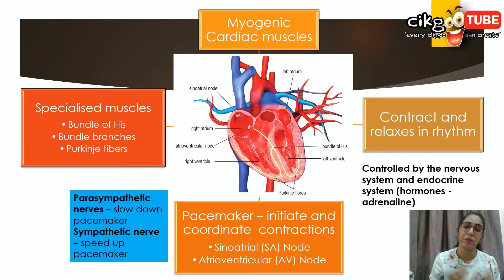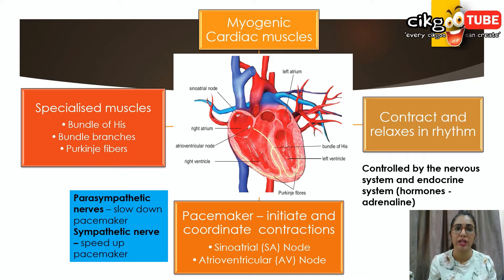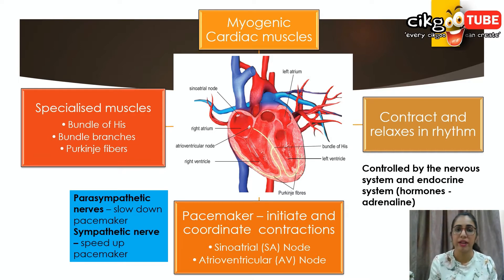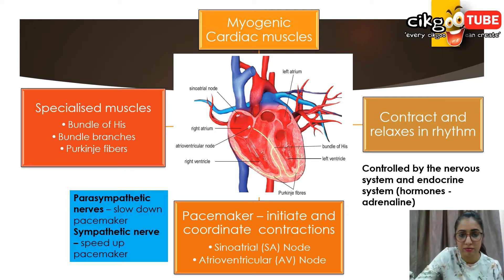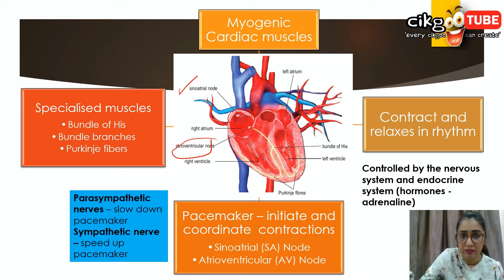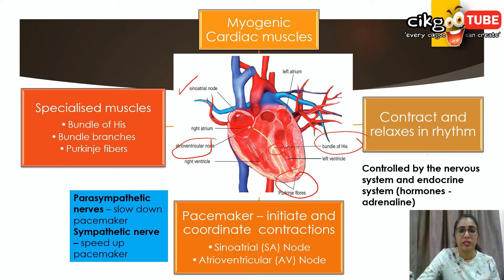The main structures involved in the mechanism of heartbeat are: the cardiac muscles, the sino-atrial node which is the SA node — also known as the pacemaker — and then the atrioventricular node. As you can see in the picture, we have the sino-atrial node and the atrioventricular node, both located at the right atrium. We also have the bundle of His and the Purkinje fibers.